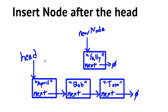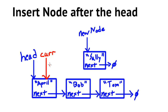We'll use a traversal pointer — instead of TP as used in the traversal video, I'll call it current. Initially, current points to head and represents the current node we're examining to determine whether our new node should come after it. We do a comparison and see that Sally comes after April, so we update current.